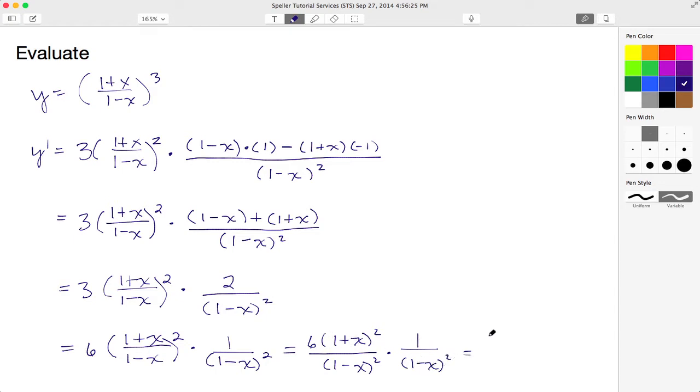So 1 times this quantity gives me that quantity back: 6 times 1 plus x quantity squared. And I know for my rules of exponents when my bases match exactly I just add my exponents. So this here turns into the quantity 1 minus x raised to the fourth power. So this here is in fact the derivative of the original function.